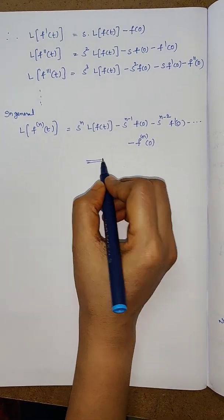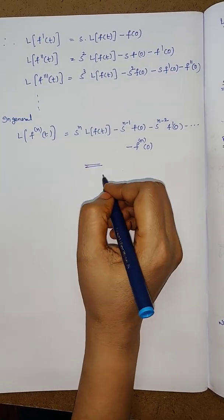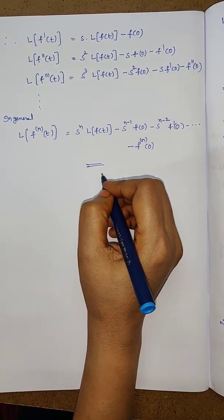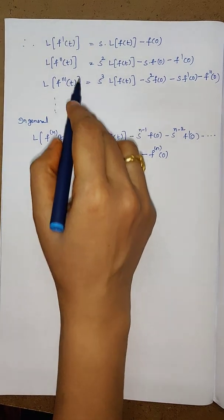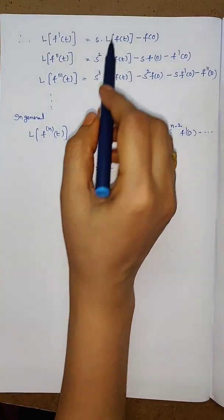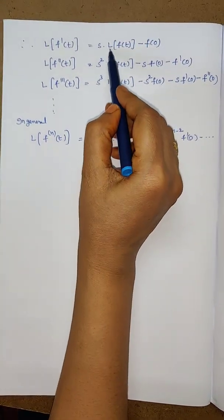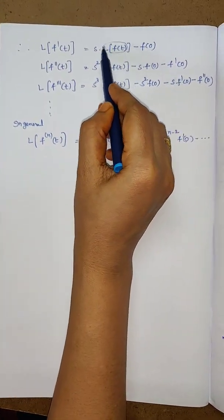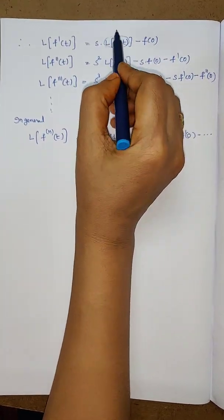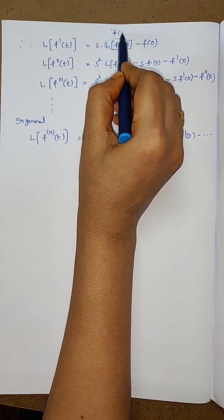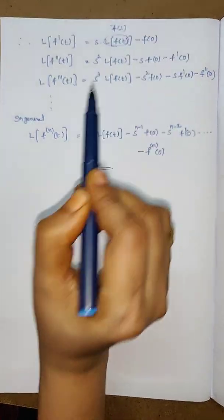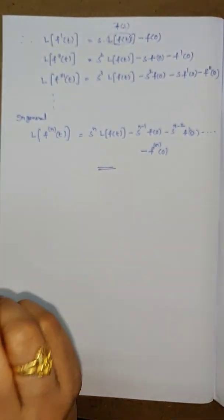This is the Laplace transform of derivatives of f of t. Throughout this, in place of Laplace transform of f of t, we may also use the notation F̄(s).